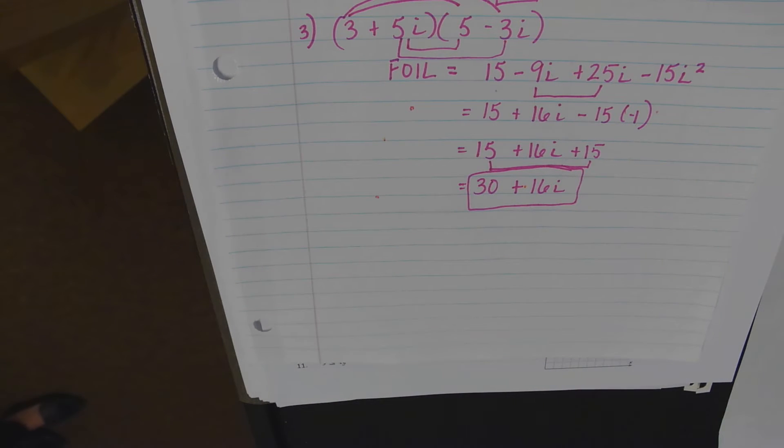30 plus 16i. I may have added an extra step, not the end of the world. I just want to make sure you see i squared equals negative one. Watch your sign. That's as hard as it's going to get.